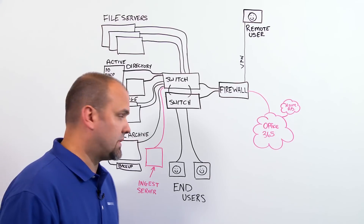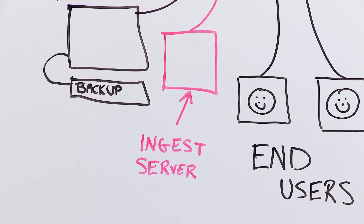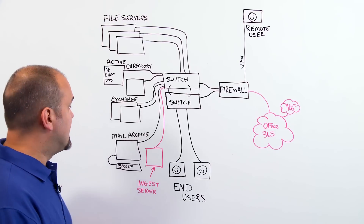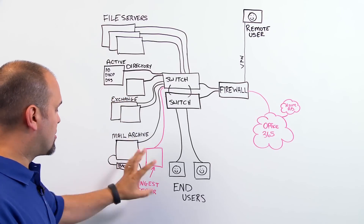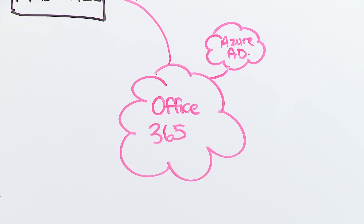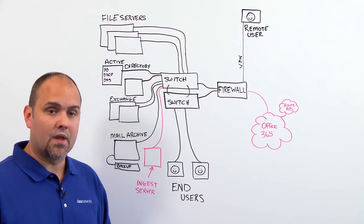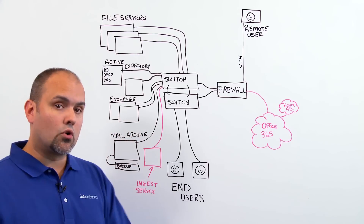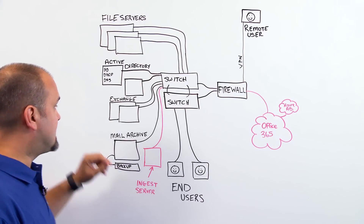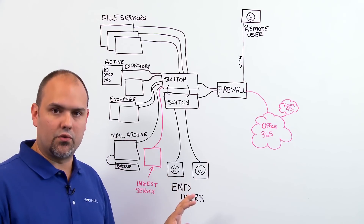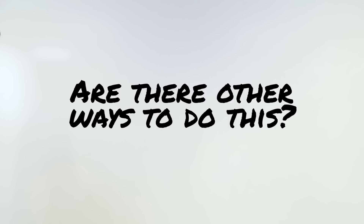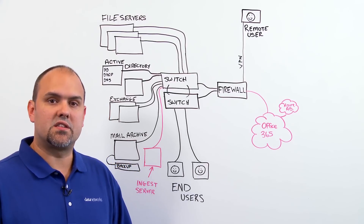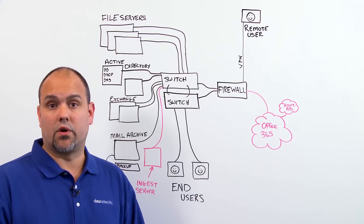Let's start with one of the components that's actually been added. If you notice, we have what's referred to as an ingest server. Basically, what this ingest server will do during your migration is take your mail out of Exchange, process it, and then upload it into your Office 365 tenant. The purpose of this design is to make sure that the migration process, which normally happens during business hours, is not taxing to your server and doesn't affect your end users. There are other ways to do this, but there are a lot of items that need to be taken into account when making that decision.